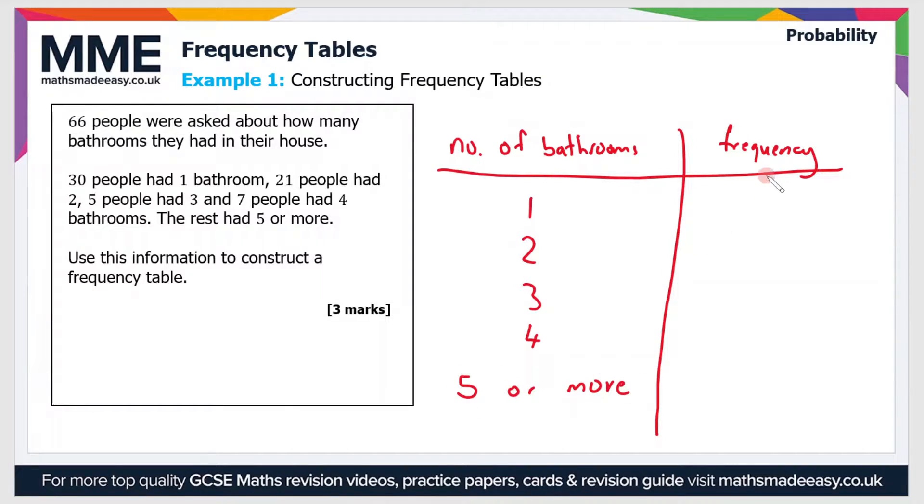The frequency is just the number of responses for each answer. If 30 people had 1 bathroom, then the frequency is 30. If 21 people had 2, that frequency is 21. 5 people had 3 and 7 people had 4 bathrooms.